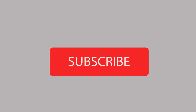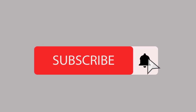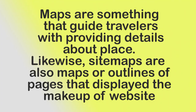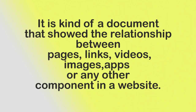What are site maps? Maps are something that guide travelers by providing details about a place. Likewise, site maps are also maps — outlines of pages that display the makeup of a website. It is a kind of document that shows the relationship between pages and links.